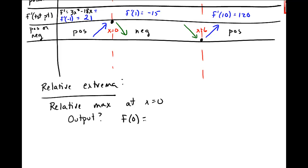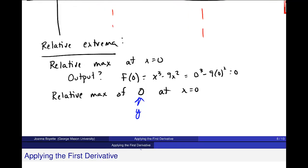f of 0, my original function, this is x cubed minus 9x squared. So that's 0 cubed minus 9 times 0 squared equals 0. So I really have the output value, the relative max, of 0 at x equal to 0. This is my y value right here. We say that the maximum value is the output value. So I want to be clear about that. This is the actual relative maximum, and this is where it's located.